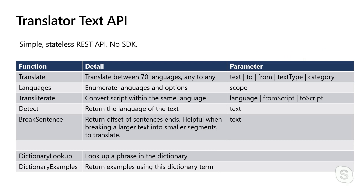Let me talk about how you actually use translation in your application. The most important function is called Translate. It's a stateless REST API — you give it a piece of text in a JSON package, and you get back that same text in the other language in a JSON package. The input formats are plain text or HTML. You can translate between more than 70 languages, any to any.